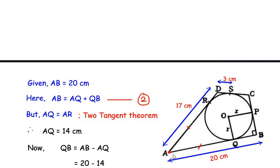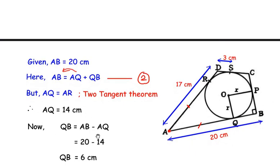Now using the equation AB = AQ + QB, we find QB = AB − AQ = 20 − 14 = 6 cm.